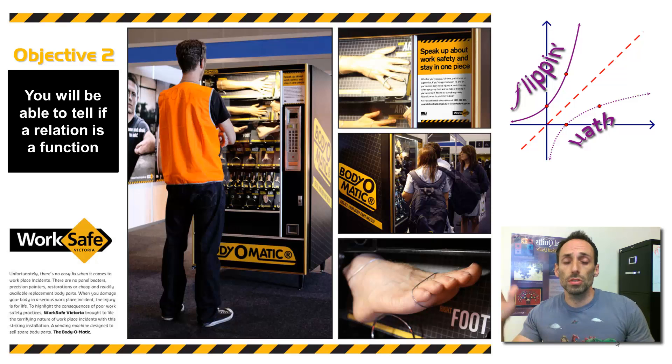We've talked about relations as just pairing up inputs and outputs, two different numbers, but a function is going to pair them up in a special way. Functions in math class are often related to vending machines, and that's what you have right here. The picture is a vending machine.